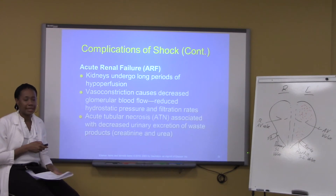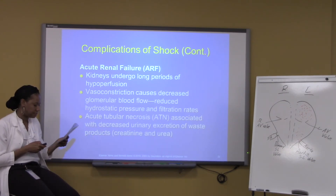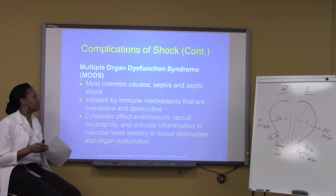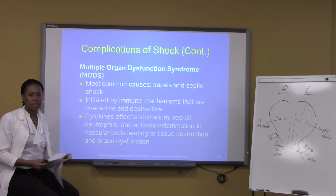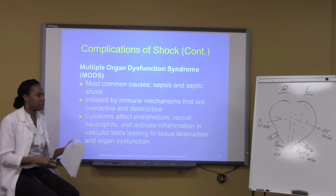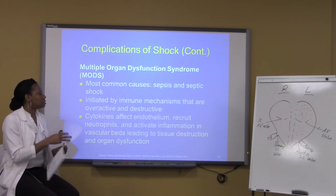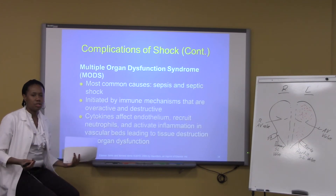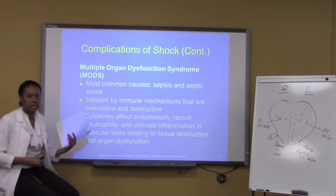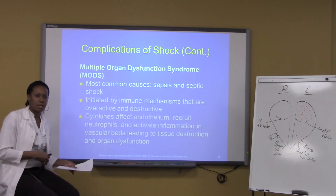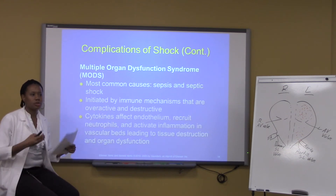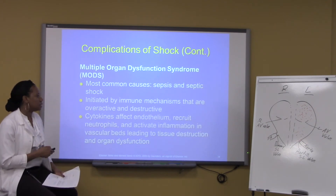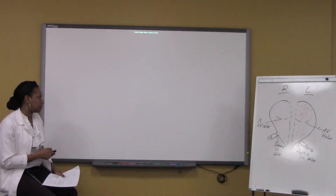The treatment for renal failure is dialysis. Lastly, this is most common with sepsis and septic shock because of the widespread inflammation. These patients can go into a state of hypoperfusion — not getting blood to just the liver or kidneys, but also the stomach and spleen and other organs — leading to multi-organ shutdown or failure.